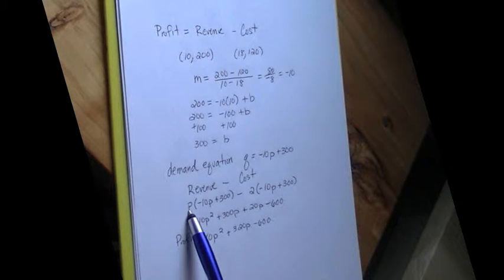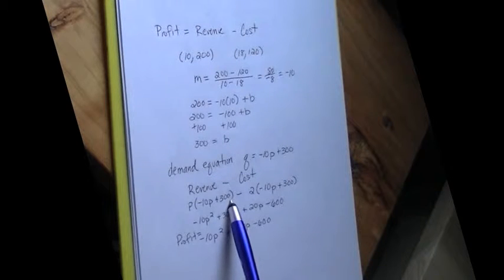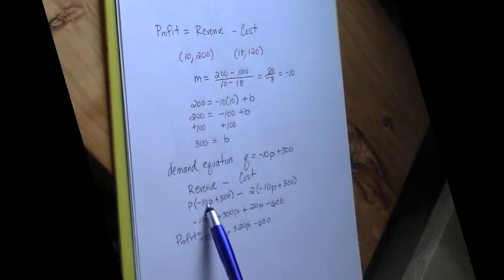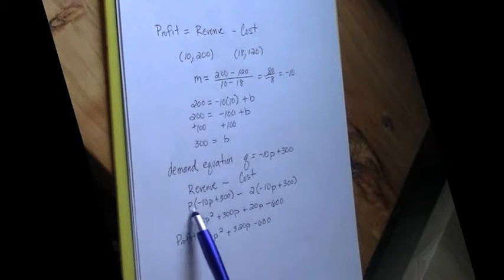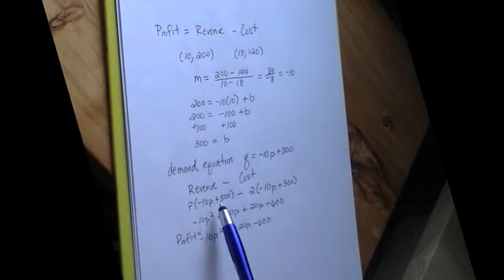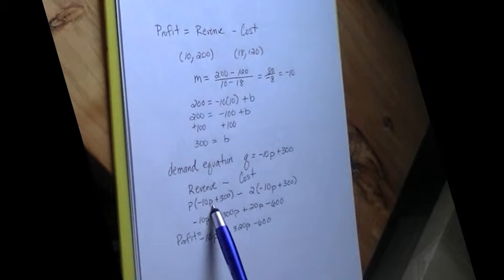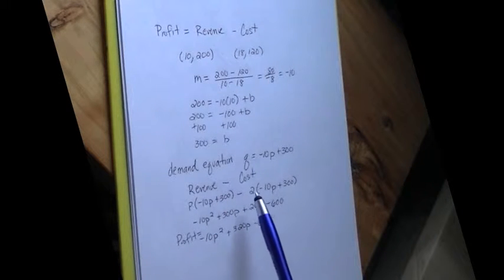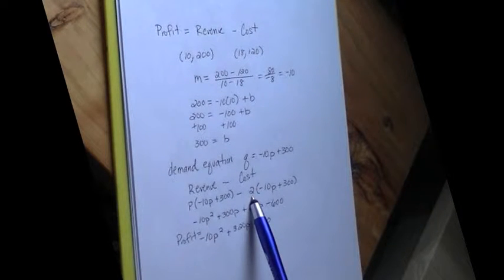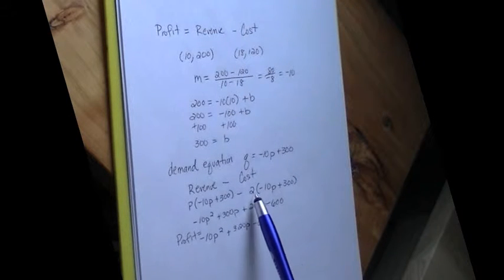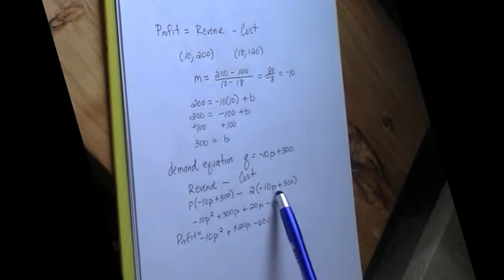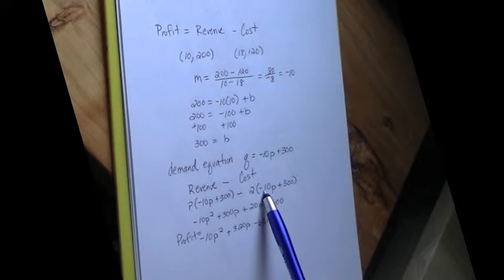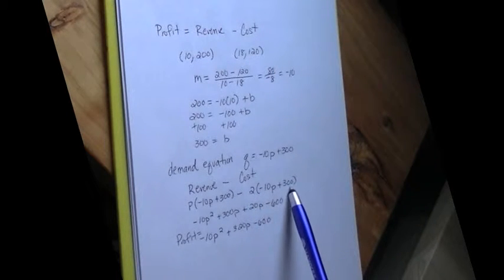Revenue is price times quantity. So it's the price I set times how many I sell. So P times Q with Q replaced with negative 10 times P plus 300. That will be my revenue. Then I want to subtract my cost. We said the little horses cost $2 each, so 2 times our quantity. So remember our quantity is still negative 10P plus 300.